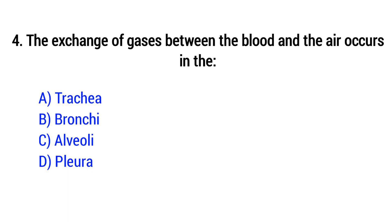Question number 4. The exchange of gases between the blood and the air occurs in: option A, Trachea; B, Bronchi; C, Alveoli; D, Flora. The right answer is option C, Alveoli.